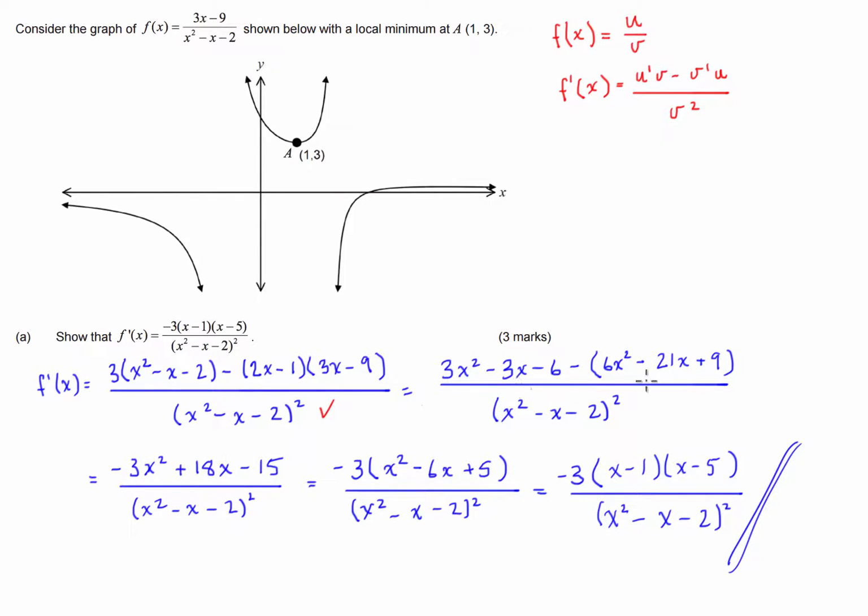So in solving this problem here, first of all, you have to identify a method for which you're going to differentiate. Now if you've got a rational function like this, the easiest method which is going to give you the simplest output is the quotient rule. Once we've done the quotient rule, from here all the way to the end is just simplifying the problem.